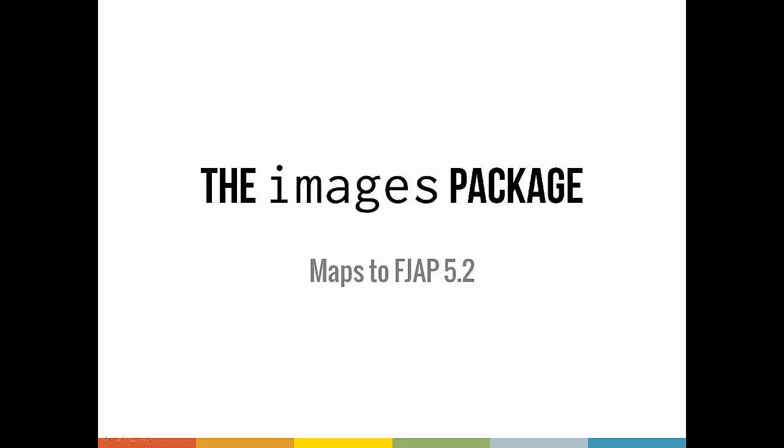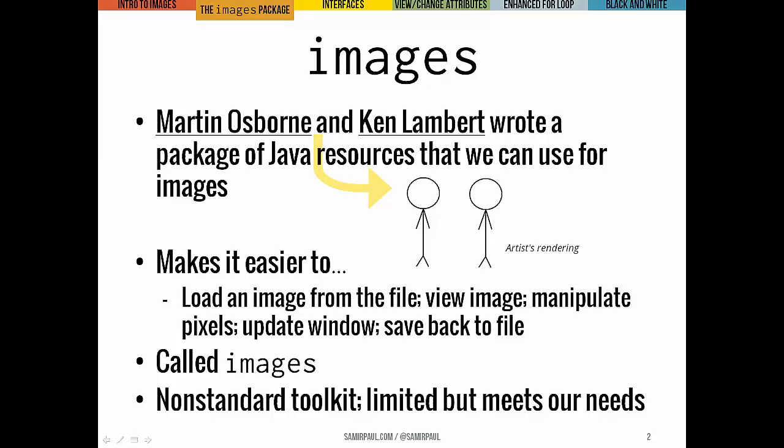To help us talk a little bit more about image processing algorithms, we're going to use a non-standard toolkit called the Images Package. It's a set of classes developed by Martin Osborne and Ken Lambert, and it makes it really easy to do simple things like loading an image from a file, viewing the image, changing pixels, updating the window to see the changes, and then saving the image back to file.